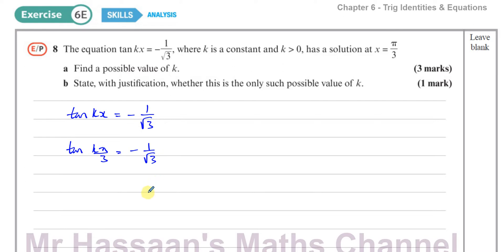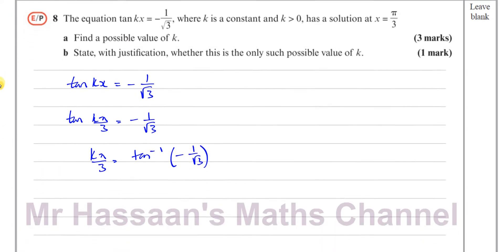Now if I solve this without considering the value of k, I can take inverse tan of both sides. So we can say that k times π over 3 equals the inverse tan of minus 1 over root 3. That gives us a principal solution.